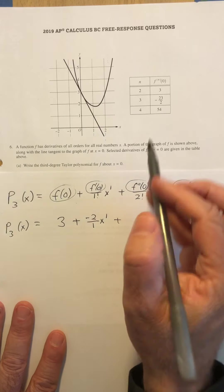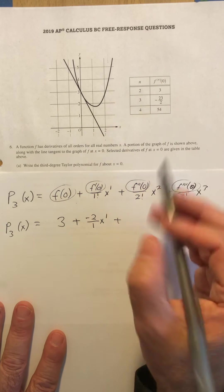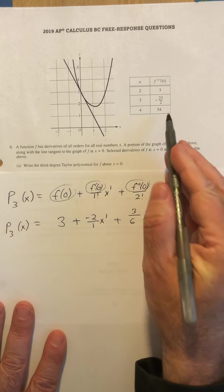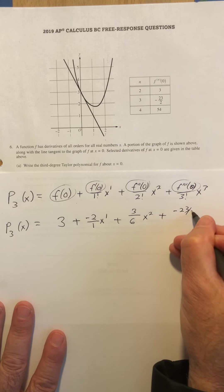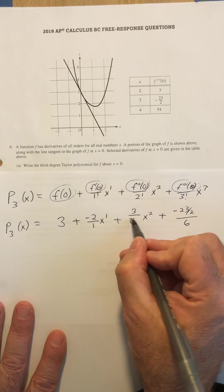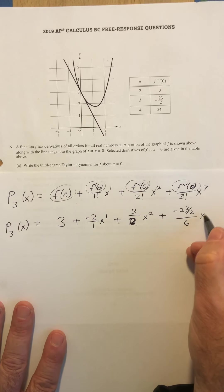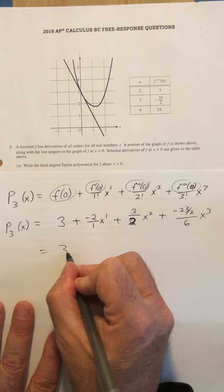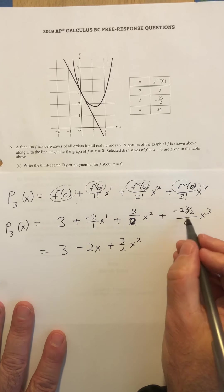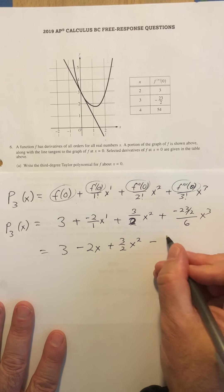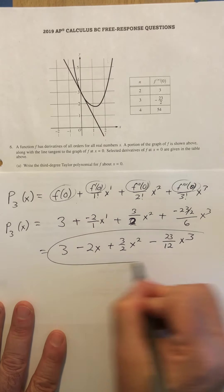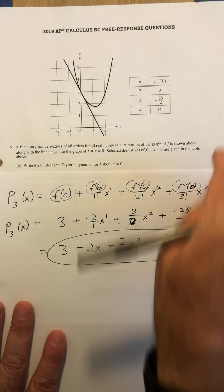The second derivative at zero is in this table — the second derivative at zero is going to be the number three, so that's three over two factorial, which gives three sixths x squared. And the third derivative is negative 23 halves over three factorial, which is six. Actually, this is two over here — my bad. So simplifying everything: I get three minus two x plus three halves x squared minus 23 twelfths x to the third. So the third degree Taylor polynomial for part A is that.